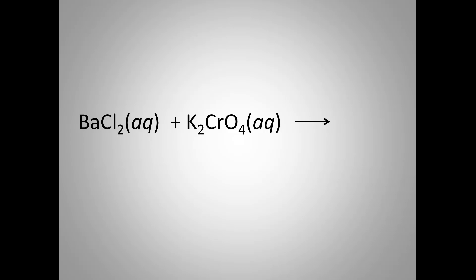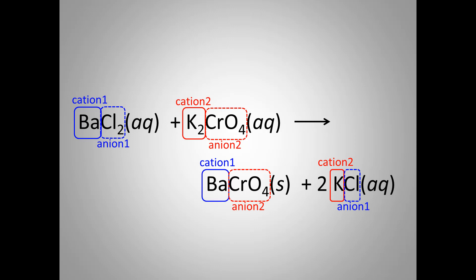In metathesis reactions, cations and anions of the starting materials change partners. In this reaction, barium and potassium are the cations, while chloride and chromate are the anions. And when these exchange partners, you see we get potassium chloride and barium chromate, the yellow solid.